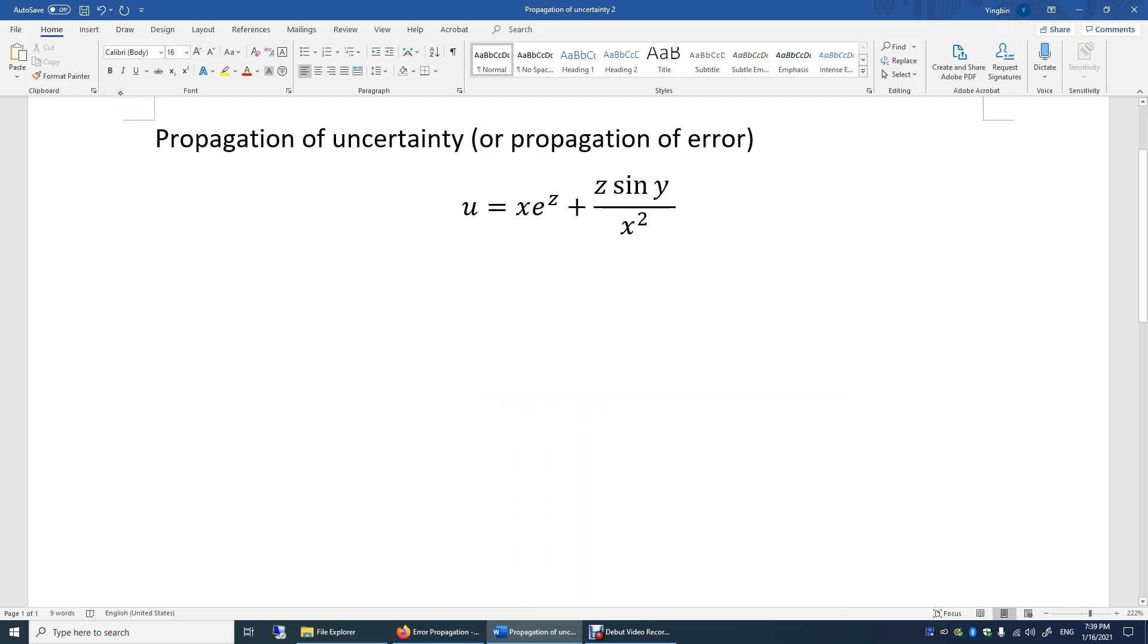In this video, I'll show you a more difficult example of propagation of uncertainty. Now let's say u is a function of x, y, and z.